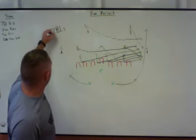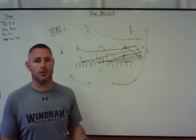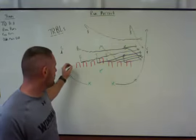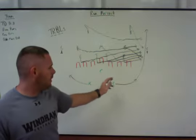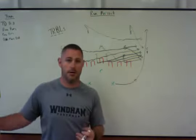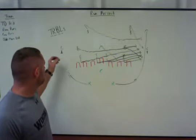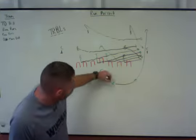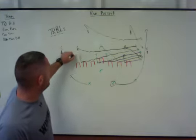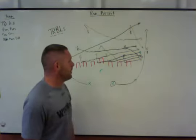I want everybody else to pursue from the inside out. The backside corner, if he's normally a force player, is what we call a 'troubles' player — troubles meaning trick plays, reverses, and bootlegs. So he's going to check for troubles first. Once in a while I'll point to the near runner and then at the last minute point to the other runner and say 'reverse,' so this kid needs to make sure he's there. But on a regular toss, this corner checks, checks, checks and then becomes the touchdown saver — the last one to make the tag.